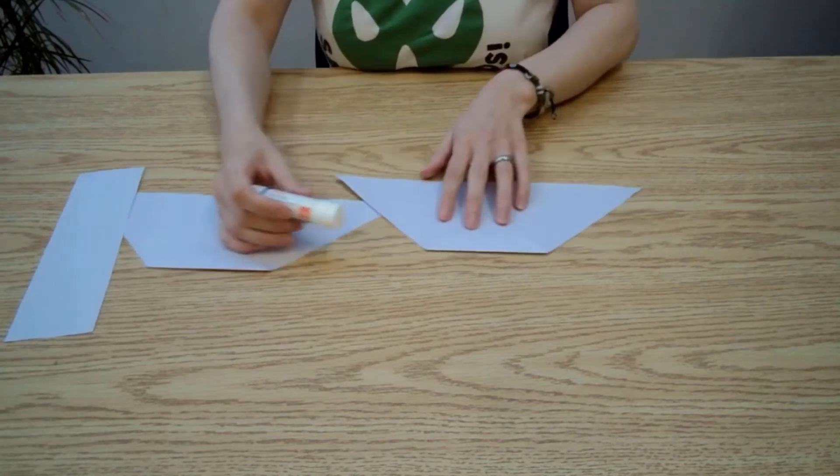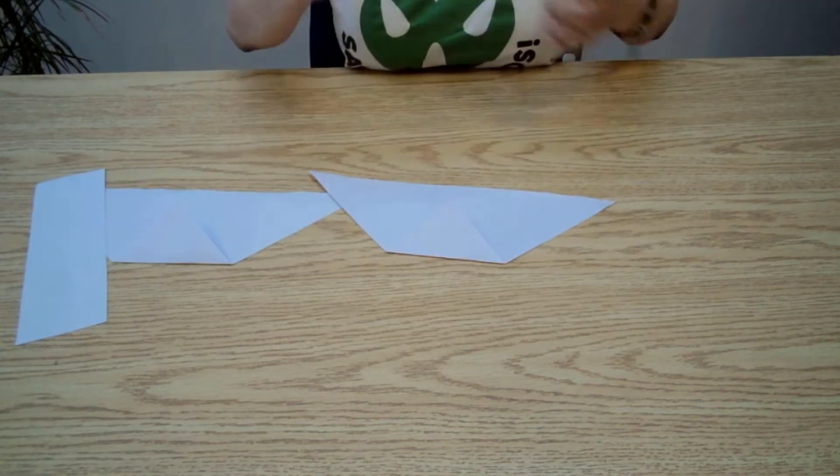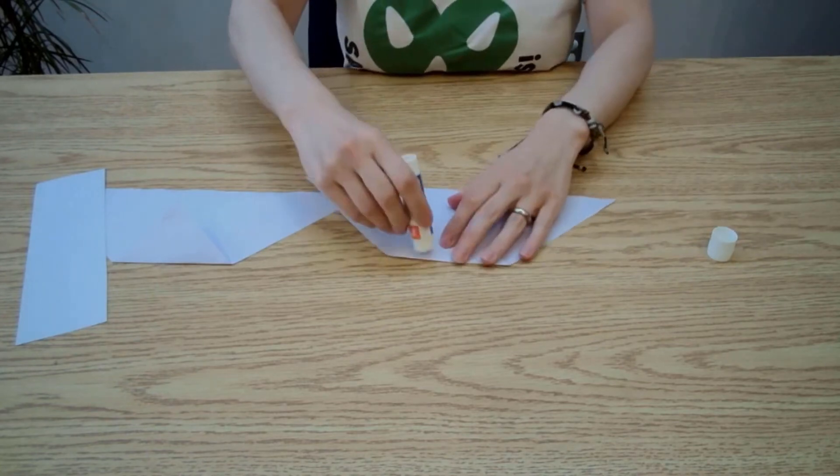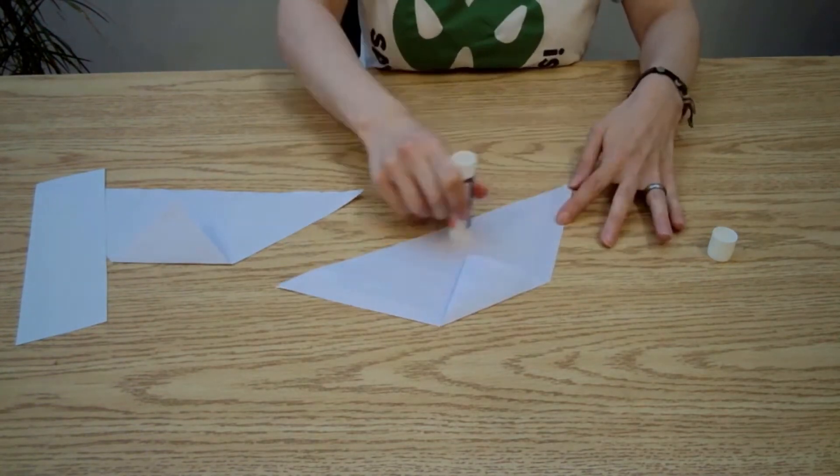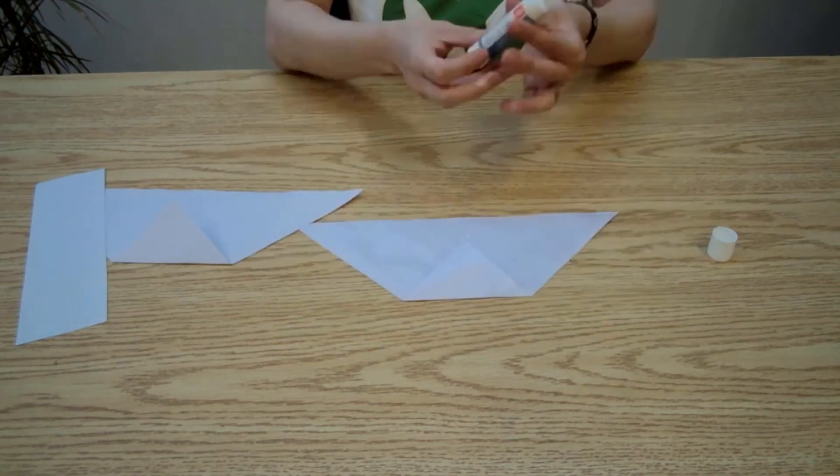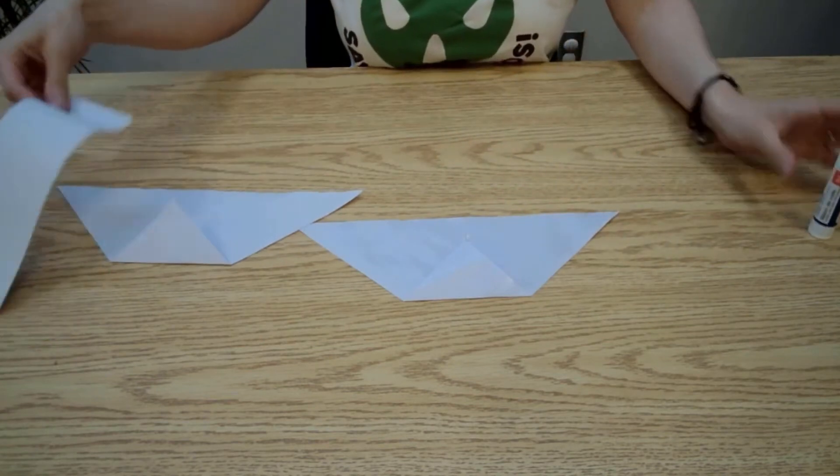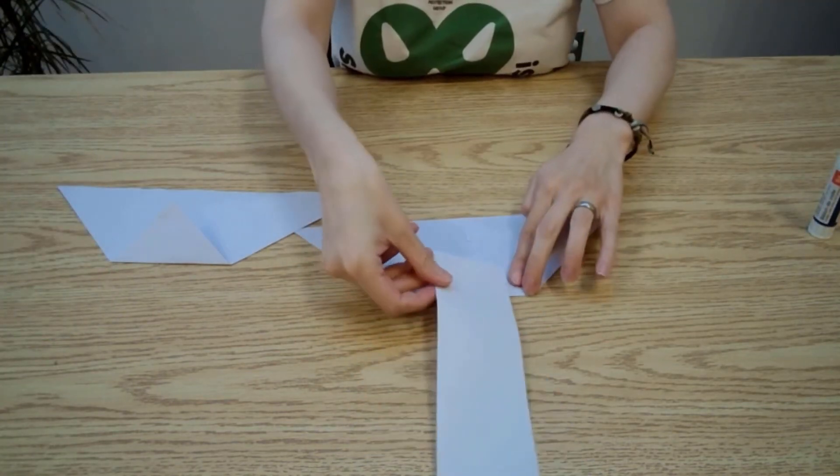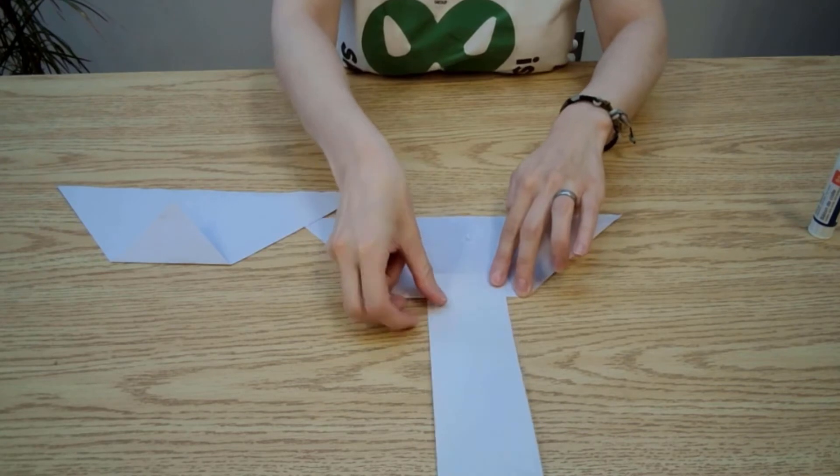Glue one of the triangles with the folded side face up. Now add the trunk piece where the folded point is.